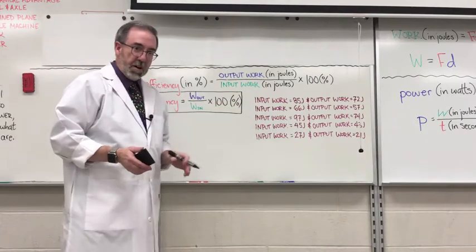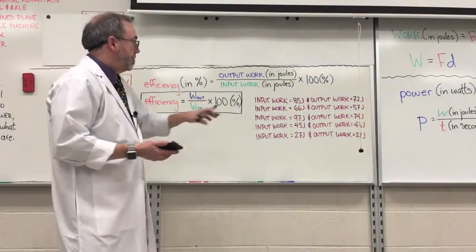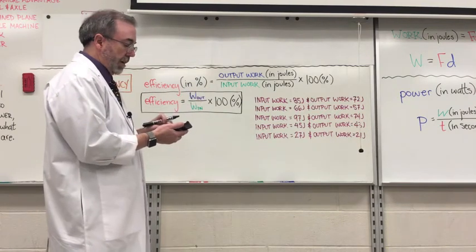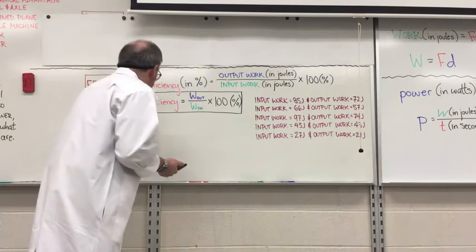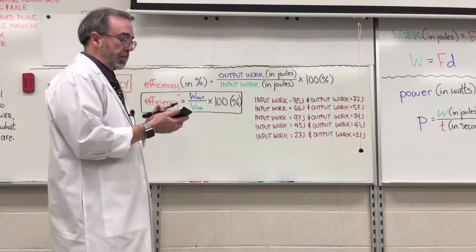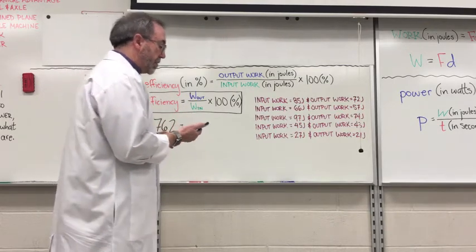All right, so I assume you've got all these done. Let's go over them together. 74 divided by 97 equals 0.762, and we're going to multiply that by 100. It's 76.2%.